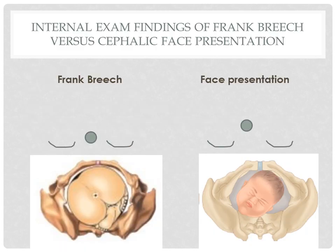In doing internal examination, how do we differentiate if it's a frank breech presentation versus a face presentation? With careful examination, the finger encounters muscular resistance with the anus, whereas the firmer, less yielding jaws are felt through the mouth. The finger, upon removal from the anus, may be stained with meconium. The ischial tuberosities and the anus form a straight line, whereas the mouth and the malar eminences form a triangular shape.